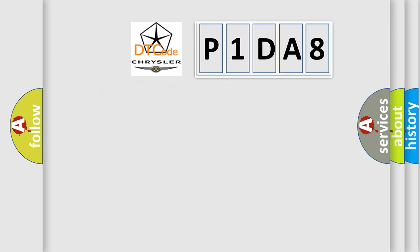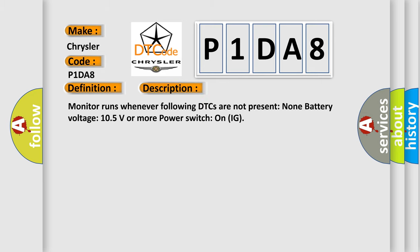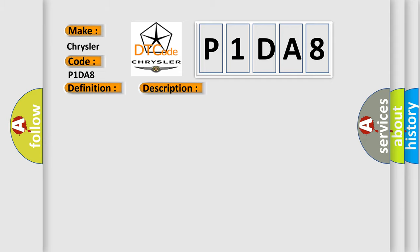So, what does the diagnostic trouble code P1DA8 interpret specifically for Chrysler car manufacturers? The basic definition is: High-speed CAN communication bus. This is a short description of this DTC code: the monitor runs whenever the following DTCs are not present — none. Battery voltage must be 10.5 volts or more, with the power switch on IG. This diagnostic error occurs most often in these cases: CAN communication bus circuit faulty module.